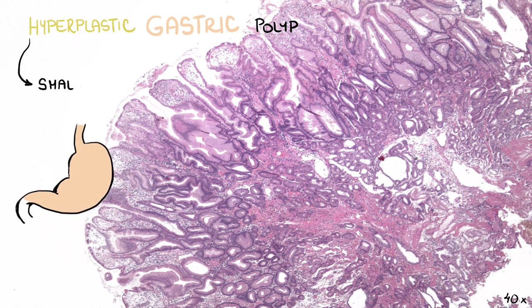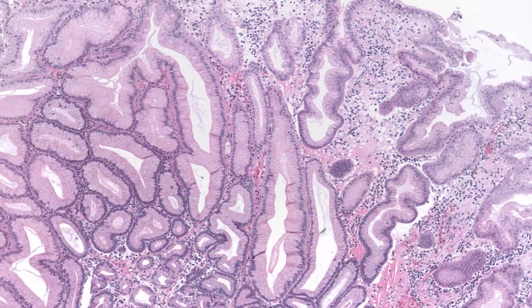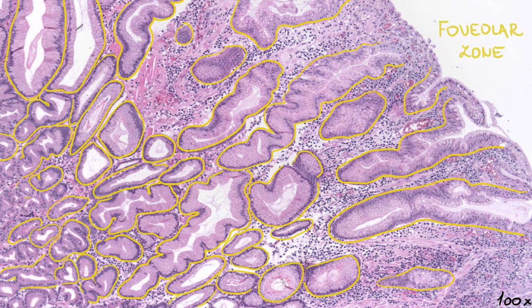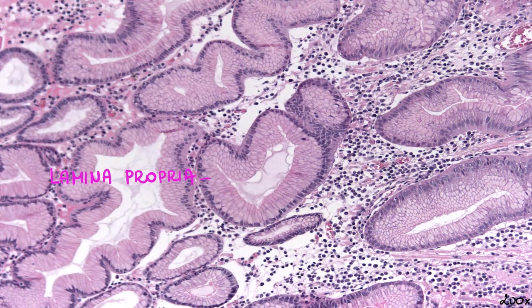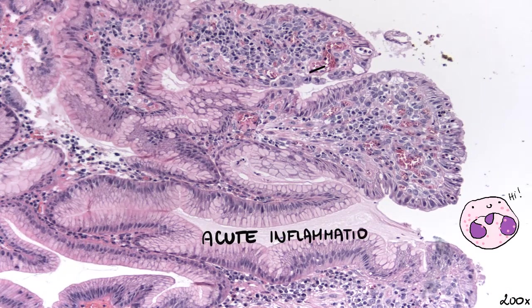Grossly, hyperplastic polyps are usually small and sessile, but over time they may reach a size of several centimeters and become multiple. Microscopically, hyperplastic changes are seen particularly in the foveolar zone of the mucosa. Foveoli are elongated, irregularly shaped, and dilated. The lamina propria is typically edematous with a variable degree of chronic and acute inflammation. The polyp may be ulcerated.